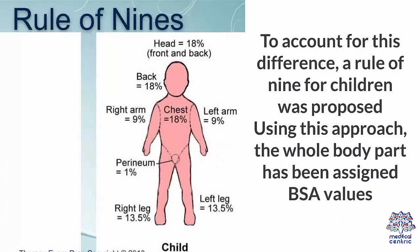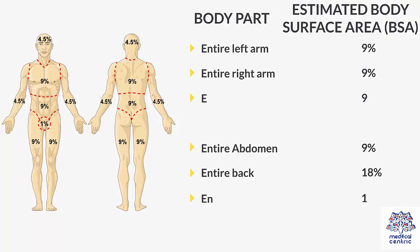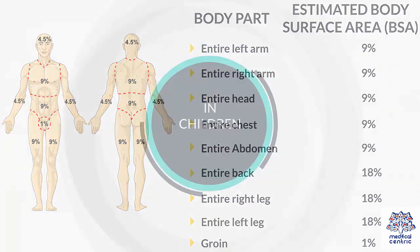Using this approach, each whole body part has been assigned BSA values. In adults, the estimated body surface area by body part is as follows: entire left arm – 9%, entire right arm – 9%, entire head – 9%, entire chest – 9%, entire abdomen – 9%, entire back – 18%, entire right leg – 18%, entire left leg – 18%, and groin – 1%.